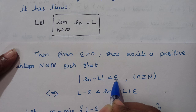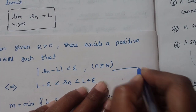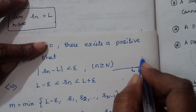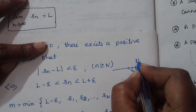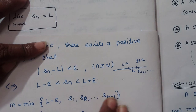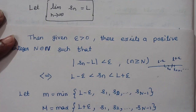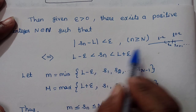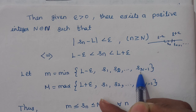Since |Sn - L| < ε, the sequence Sn lies in the interval (L - ε, L + ε) for n ≥ N. For the earlier terms S1, S2, ..., S(N-1), we take their minimum as the lower bound (L - ε is lower bound for the tail). The minimum of {S1, S2, ..., S(N-1), L - ε} serves as the lower bound small m.